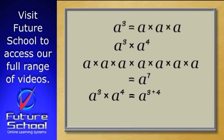So a to the power of 3 times a to the power of 4 equals a to the power of 3 plus 4, which equals a to the power of 7.